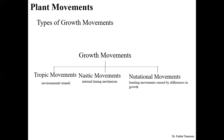The third type of movement is the nutational movement. These are basically the bending movements of stem, root, and leaves, caused by differences in the growth of organs in the plant, which could result from environmental conditions. So these are the three different types of growth movements, and we will discuss them in detail in future lectures.